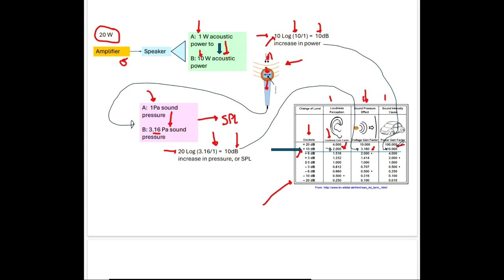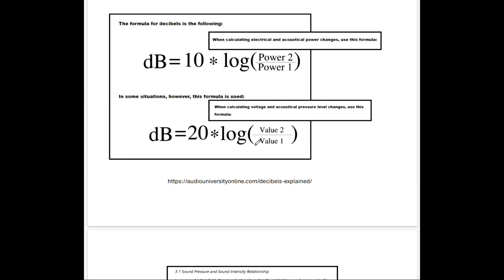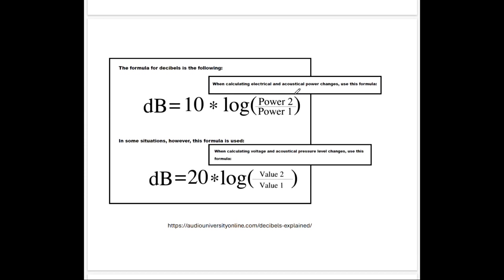If we went from 1 watt to 100 watts, that would be 100 times the power, 10 times the pressure increase, but it would only yield four times the perceived loudness. That's how the decibel scale works. When calculating power changes we use 10 log of the power we're interested in divided by a reference power — it's nothing more than a ratio, scaled or compressed with a logarithmic function.